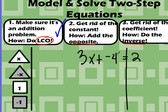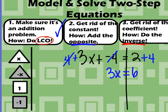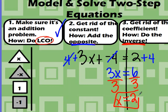So to get rid of the constant, you add the opposite. The opposite of negative 4 is positive 4. And whatever you do to one side, you do to the other. So I've got 3x equals, and 2 plus 4 is 6. To get rid of the coefficient, you do the inverse. The inverse of times 3 is going to be divided by 3. Whatever you do to one side, you do to the other. And 6 divided by 3 is going to be 2.